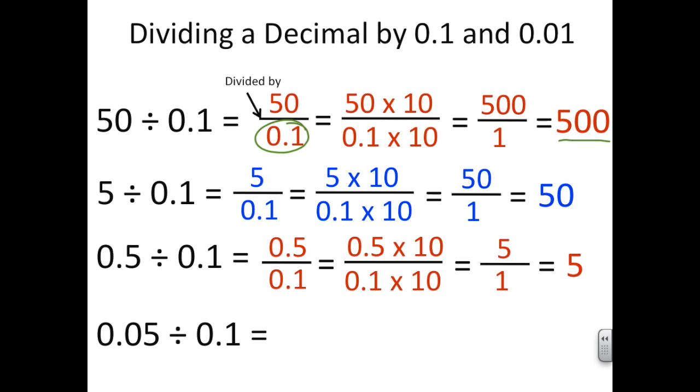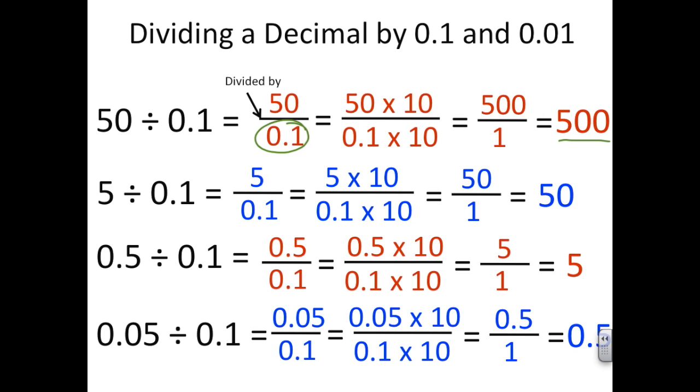And I'm going to do the same thing to solve the last problem here. I'm rewriting it as a fraction, I'm multiplying it by 10 to make the denominator a whole number, and I am solving. And my answer is 0.5. So 0.05 divided by 0.1 is 0.5.